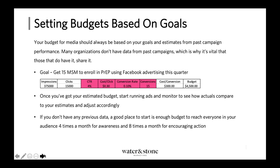Let's say we have a goal to get 15 MSM to enroll in PrEP using Facebook advertising over the next three months. If I have conversion rate information — in this case 0.1% — that means 0.1% of people who come to my website will sign up for PrEP. So I can divide 15 conversions by 0.1% to get how many clicks I would need to drive — which is 15,000 — to my website in order to get 15 conversions. If I know my cost per click is $0.30 on Facebook, I can multiply that by 15,000 clicks to get a budget of $4,500.